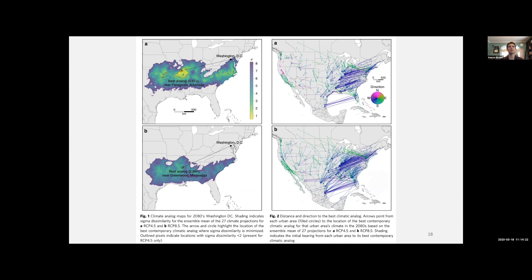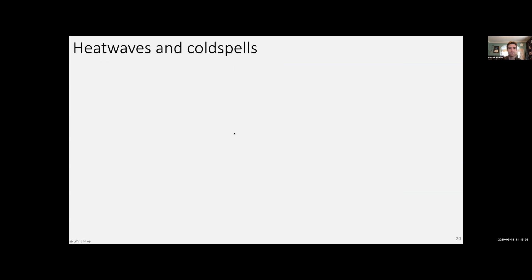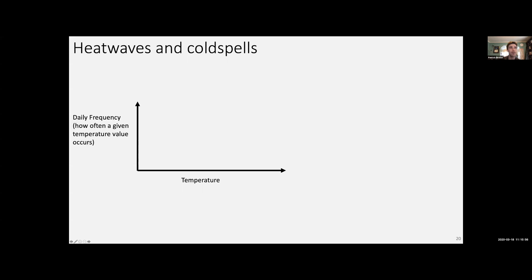Another important way to think about temperature change impacts is not just the average temperature, but how the average manifests in terms of heat waves and cold spells. We need to think about the distribution of temperature — how frequently you get temperatures at various values. We usually think about this as a histogram or bell curve: frequency on the y-axis and temperature values on the x-axis, with colder values on the left and warmer on the right.